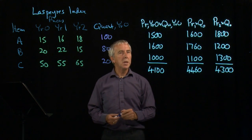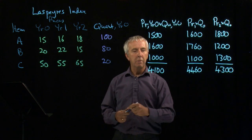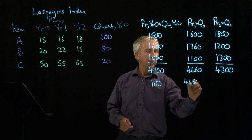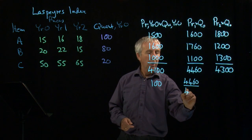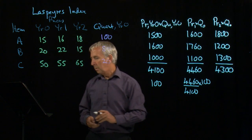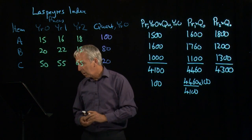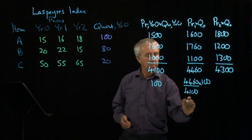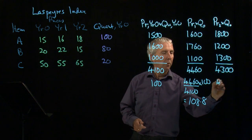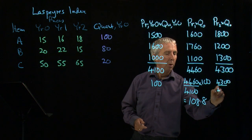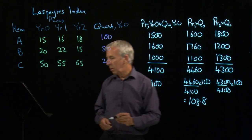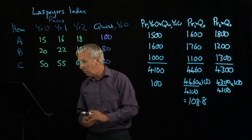Now we can work out the index numbers. Taking year zero as 100, for year one we get 4,460 over 4,100 times 100, which gives us 108.8. For year two we get 4,300 over 4,100 times 100, which gives us 104.9.